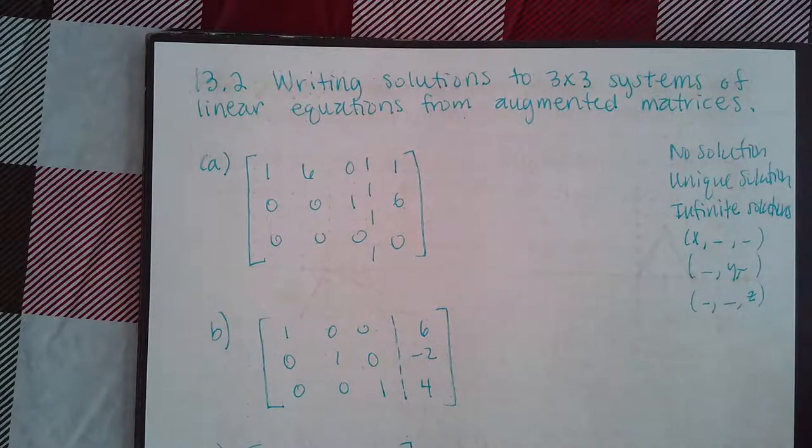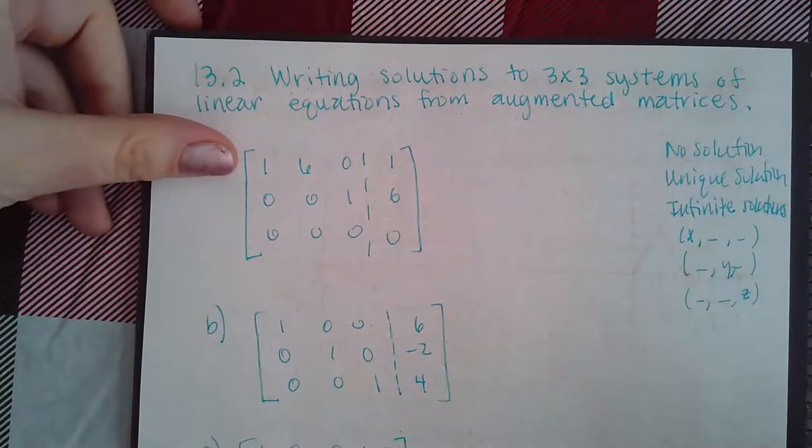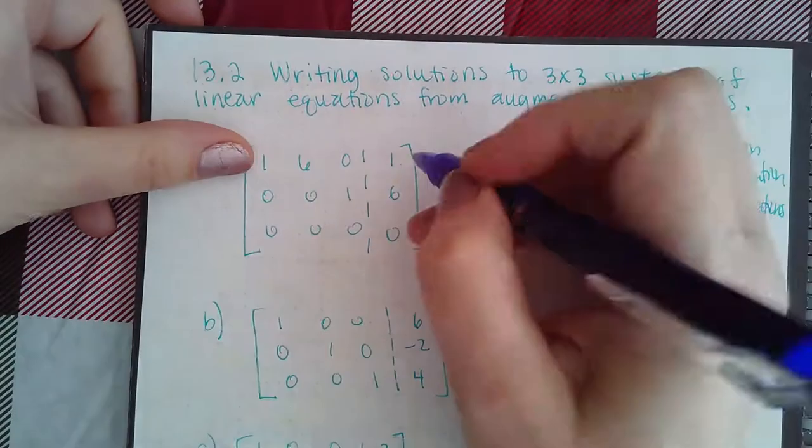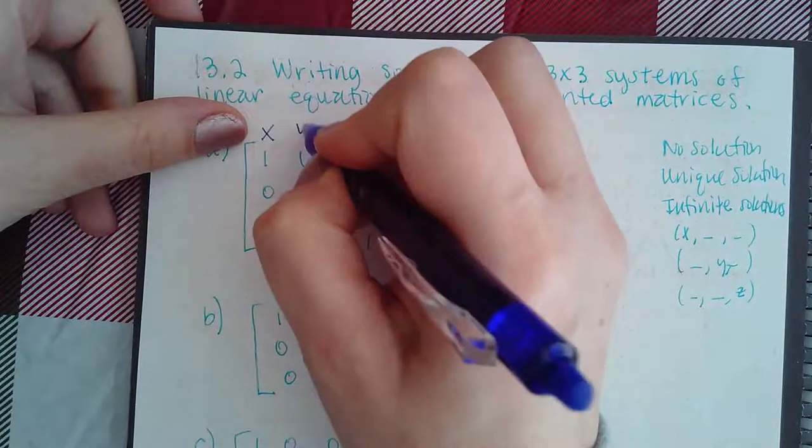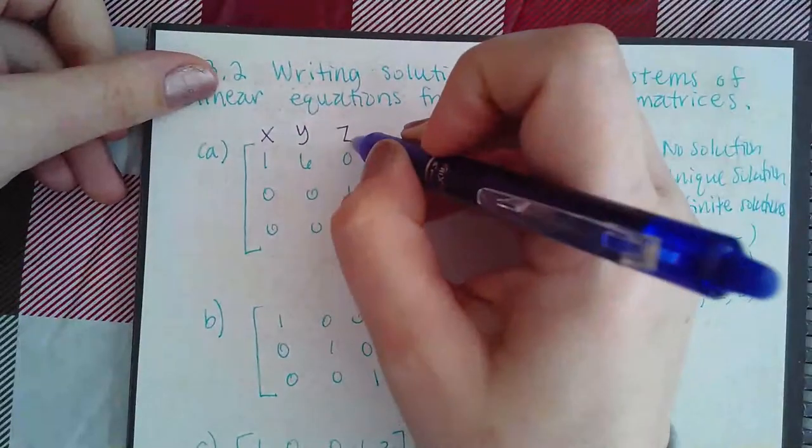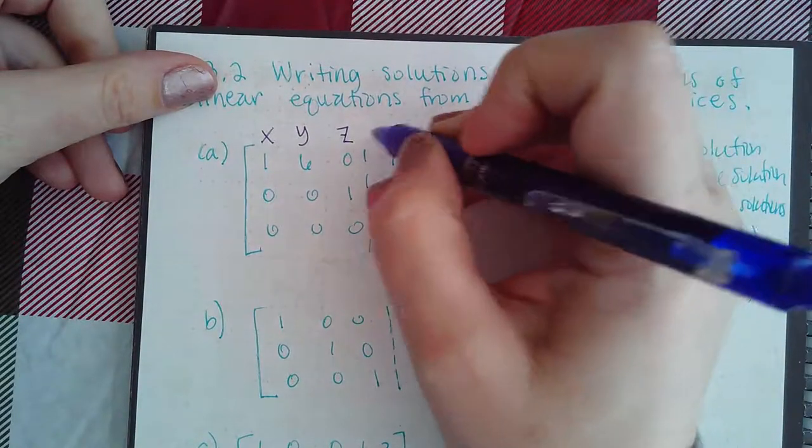In this topic, it's 13.2: writing solutions to a three by three system of linear equations from augmented matrices. We're going to write these back into their equation forms. Remember, this is x, this is y, and because it's a three by three, now we have the variable z. This is the equal sign and then the constants on the right hand side.